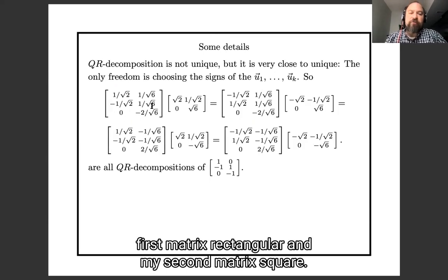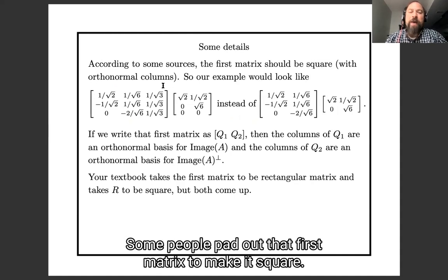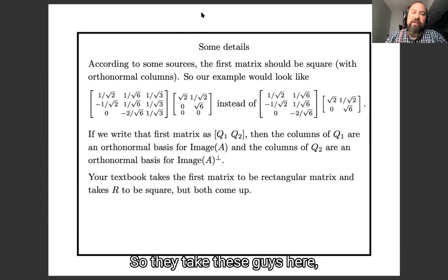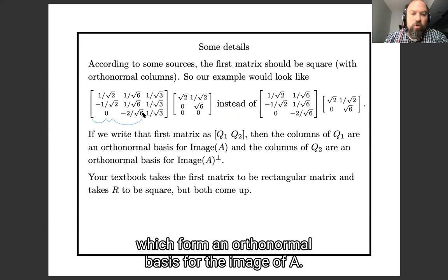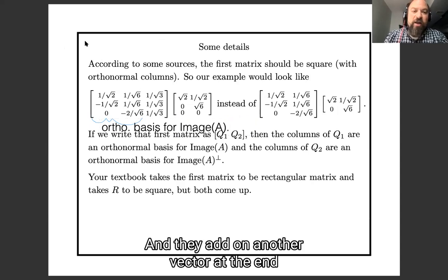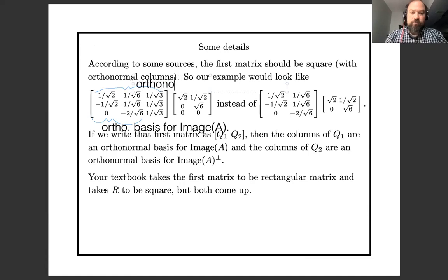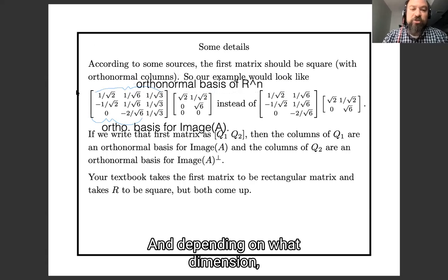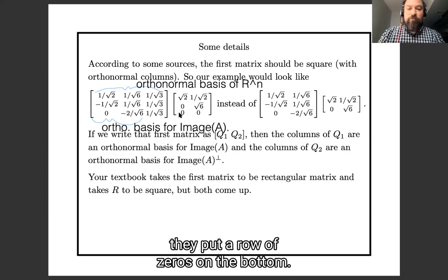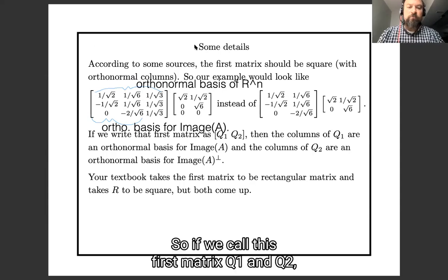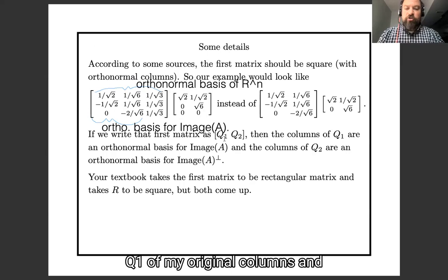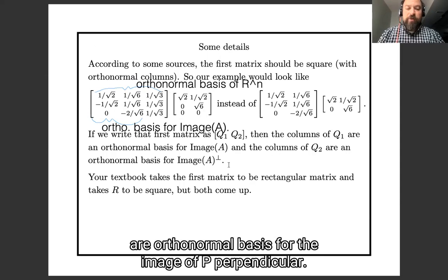Also, I've been writing things with my first matrix rectangular and my second matrix square. Some people pad out that first matrix to make it square. So they take these guys here, which form an orthonormal basis for the image of A, and they add on another vector at the end here to make an orthonormal basis for R3. Or Rn, depending on what dimension we're in. And when they pad out an extra column here, they put a row of zeros on the bottom.